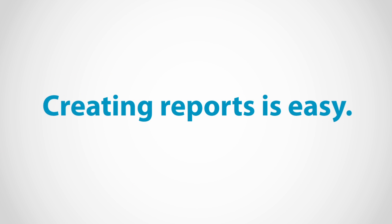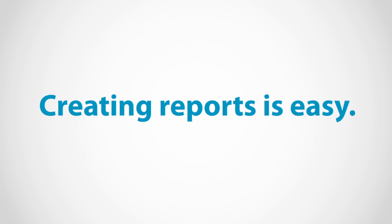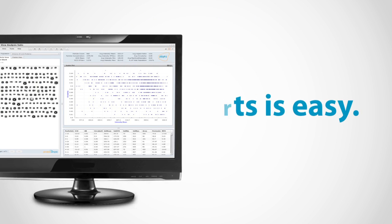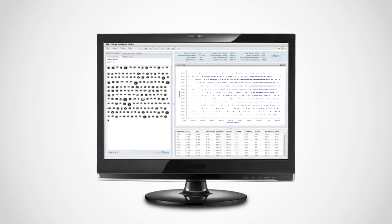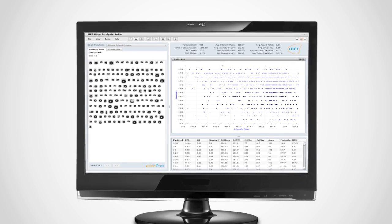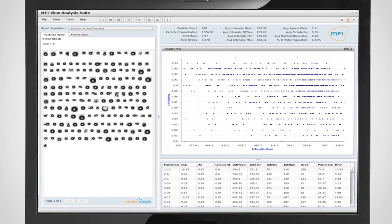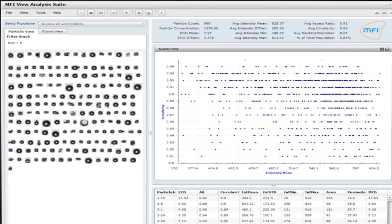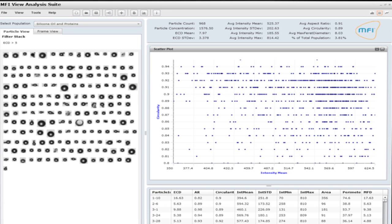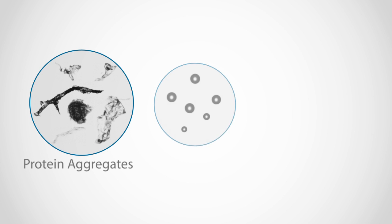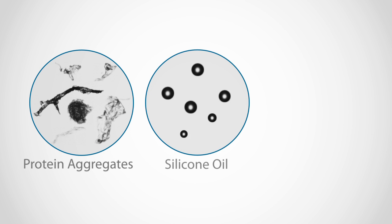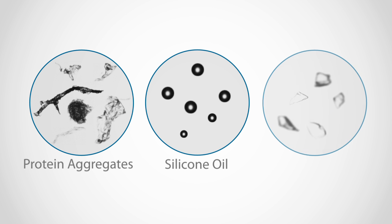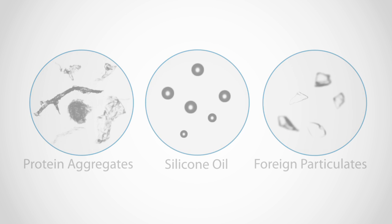Viewing data and creating reports is easy. Simply set parameters to filter your data for size, intensity, and shape. Now you can differentiate particles such as protein aggregates, silicone oil droplets, air bubbles, and other foreign particulates.